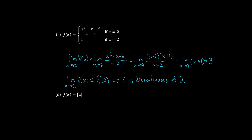Let's look at the greatest integer function, also called the floor function. It chops off any decimals to return the closest integer below the number: 0.9 becomes 0, 2.6 becomes 2, π becomes 3. On the graph, at x=0 it equals 0, and just before x=1 (like 0.99) it's still 0, but the moment it hits 1 it jumps up to 1. This step pattern continues.